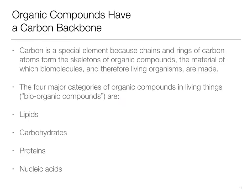Carbon is a particularly important element because chains and rings of carbon atoms form the skeletons of organic compounds, the material of which biomolecules and therefore living organisms are made. The chemistry of carbon is called organic chemistry. The four major categories of organic compounds in living things — bio-organic compounds — are lipids, carbohydrates, proteins, and nucleic acids.